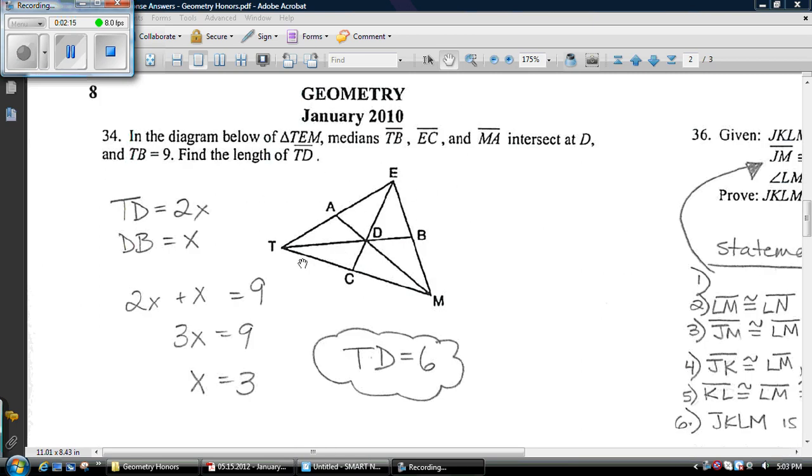34. This is where the centroids intersect. They intersect in a 2 to 1 ratio. So TD is 2x and DB is x. And you just say 2x plus x is equal to 9. TD is just two-thirds of 9 if you wanted to do it that way as well. The answer, you're going to get a 6.